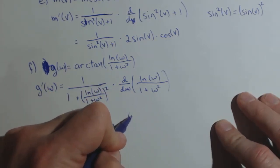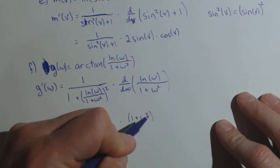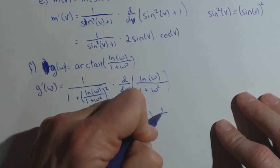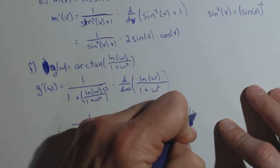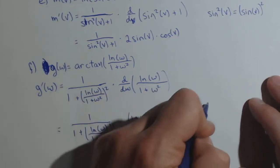The quotient rule says it's the denominator, one plus w squared, times the derivative of the numerator, one over w, minus the numerator, natural log of w, times the derivative of the denominator, which is two w,